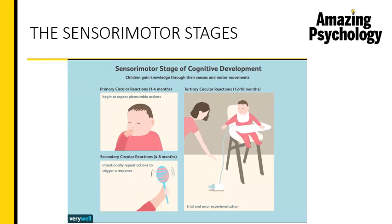The different stages of sensorimotor development can be seen in a picture: primary circular reactions from one to four months where the child repeats pleasurable actions; secondary circular reactions from four to eight months where the child repeats actions to trigger a response; and tertiary circular reactions from 12 to 18 months where the child experiments through trial and error, such as throwing objects to see what happens. I deviated slightly from the textbook so you can get a clearer idea about Piaget's cognitive development, but everything from the textbook has been covered here.